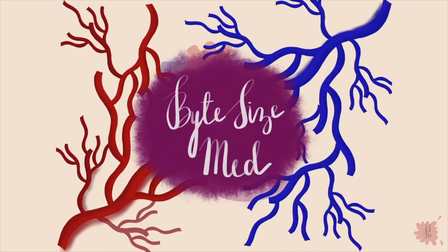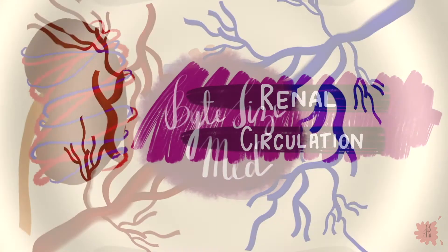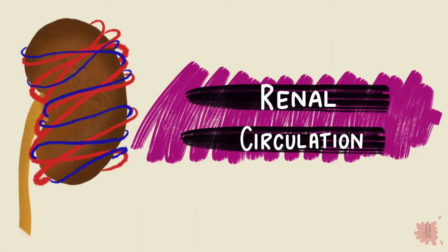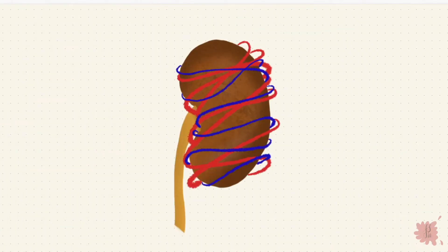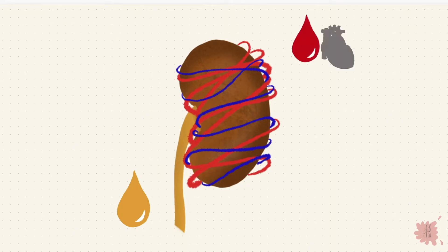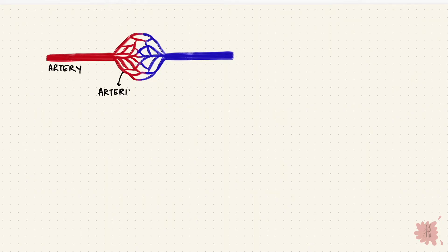Hello and welcome to Bite Size Med. This video is on renal circulation. The kidney's excretory function results in the formation of urine, and they do that from blood. The kidneys have a high blood flow — they get around 25% of the cardiac output. The standard layout of a circulatory pathway involves arteries branching into arterioles and then capillaries, followed by venules and veins.